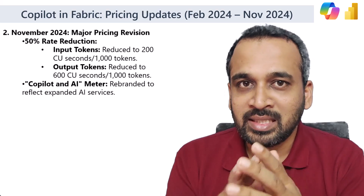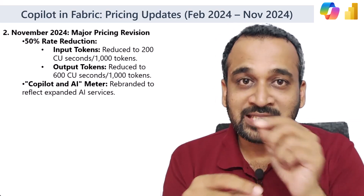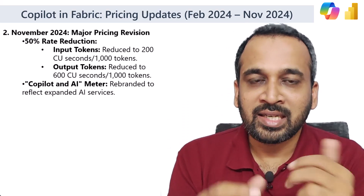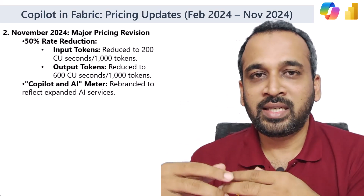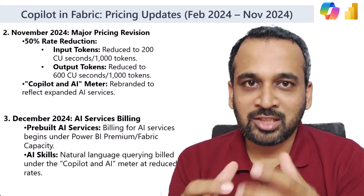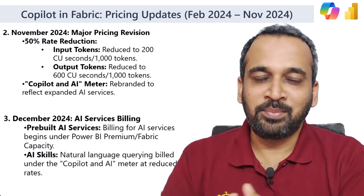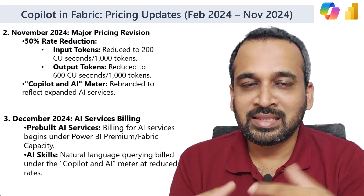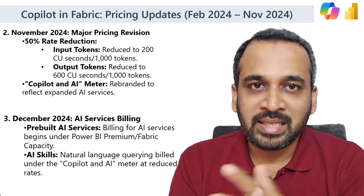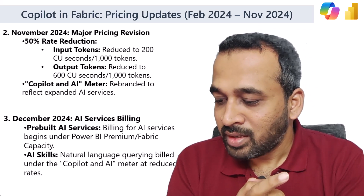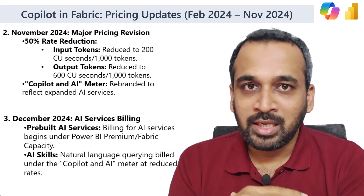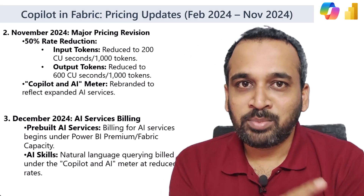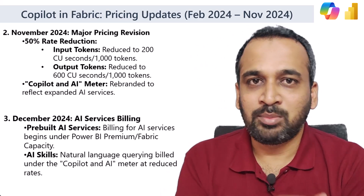Microsoft also rebranded the category in the Capacity Metrics app to 'Copilot and AI,' because they recently launched Fabric AI Skills, which is also a Copilot-related feature happening behind the scenes. So they clubbed these together under the new label. You can use Fabric AI Skills on top of that as well, and all of this is built on the capacity metric itself.